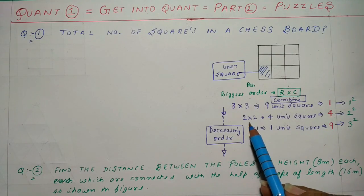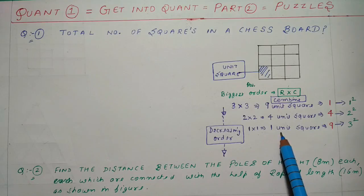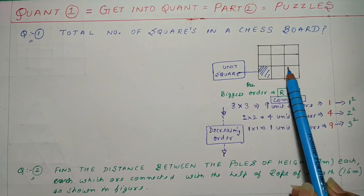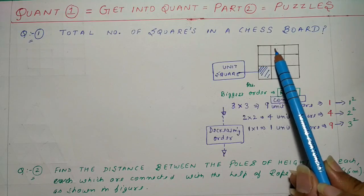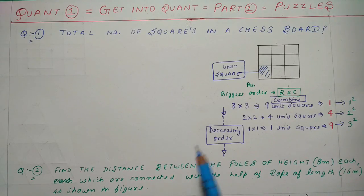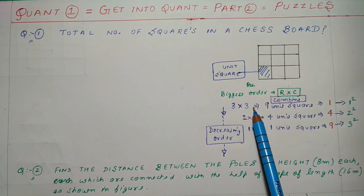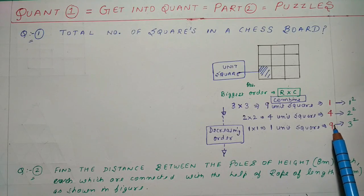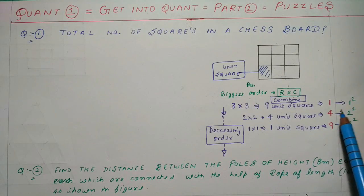Then we decrease the order from 2x2 to 1x1. 1x1 means 1 unit square — how many squares will be formed? Each single unit square is itself 1 square. So we get 9 such unit squares — 1, 2, 3, 4, 5, 6, 7, 8, 9. So 9 squares found. The approach is: when I got the biggest order (3x3) I got 1 square; 2x2 gave 4 squares; 1x1 gave 9 squares. It means 1 is 1 squared, 4 is 2 squared, and 9 is 3 squared.